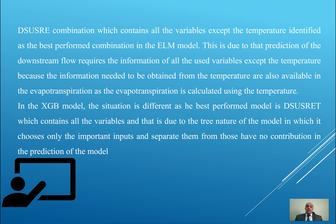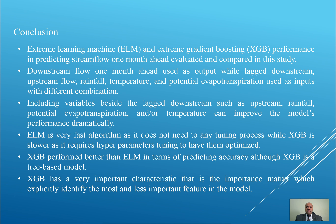The downstream-upstream-rainfall-evapotranspiration combination — containing all variables except temperature — is the best performer for ELM. This is because evapotranspiration is already calculated using temperature, so including both can deteriorate model performance. However, this is not the case for XGBoost, because XGBoost has a very important advantage: it can identify and use only the important input features, while unimportant features are excluded from calculations.